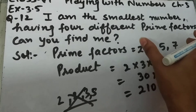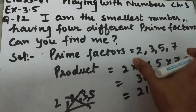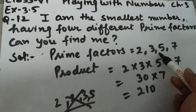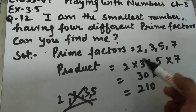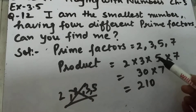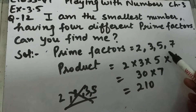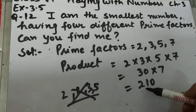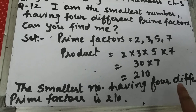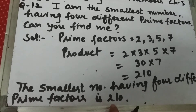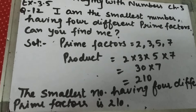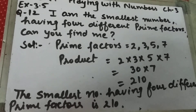All the prime factors should be different. That is the reason I have taken all the prime factors different: 2, 3, 5, and 7. Since this is the smallest number, we take the smaller prime numbers, and we multiply all these numbers to get the smallest number, which is 210. So the smallest number having 4 different prime factors is 210. This is question number 12 of exercise 3.5, and this is the last question of exercise 3.5.